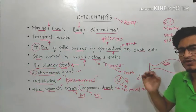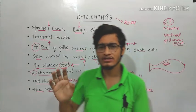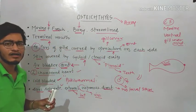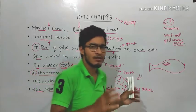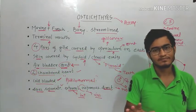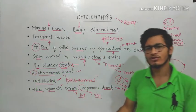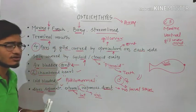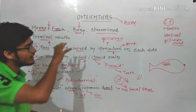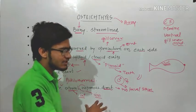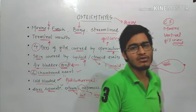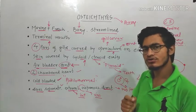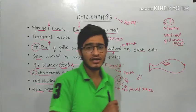After watching these two videos carefully — on Osteichthyes and Chondrichthyes — you can easily memorize all the characters, because the characters have been repeated approximately five times. If you focus on the characters which are different and learn the character of one category only, you can easily derive the corresponding character for the other.